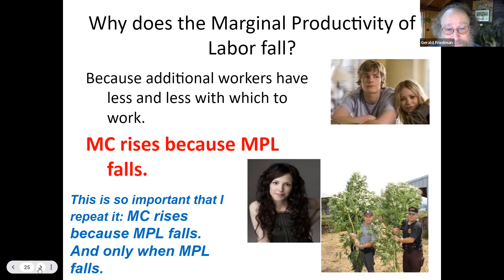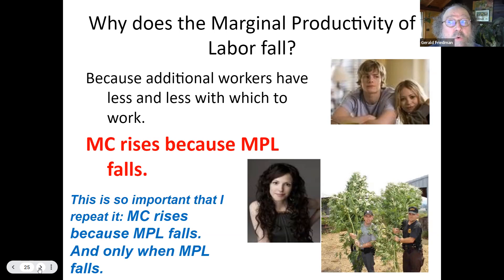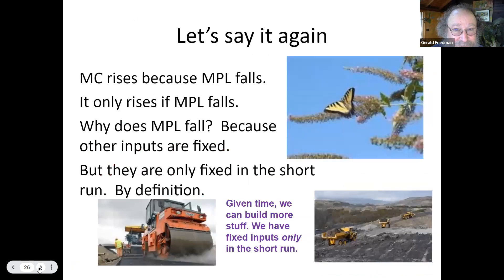Regardless of whether it matters in business, this is good way for businesses to think, and for this class it is fundamental. For any economics class you take here or in business school, or even in other social sciences, it's good to understand these ideas. Marginal cost rises because the marginal product of labor falls — and only when the marginal product of labor falls. Why does marginal product of labor fall? Because other inputs are fixed — but they're only fixed in the short run.